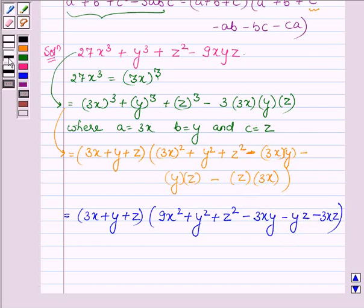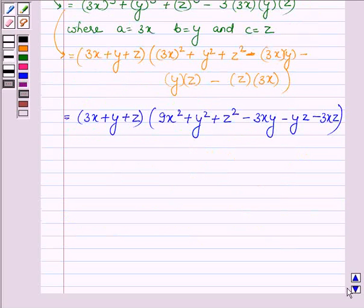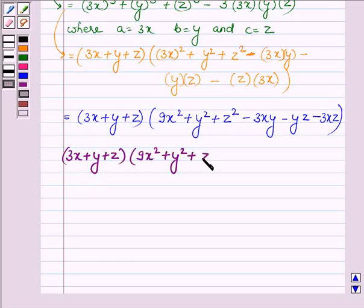Hence, on factorizing we get 3x plus y plus z into 9x square plus y square plus z square minus 3xy minus yz minus 3xz.